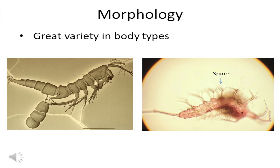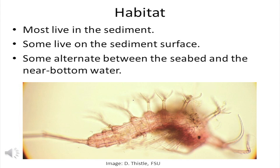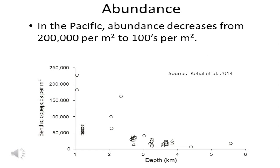Harpacticoids come in a great variety of body shapes. Some are smooth, like the specimen on the left, and some have amazingly complicated and large spines, like the specimen on the right. Most harpacticoids live in the sediment; some live on the sediment surface, and a few alternate between the seabed and the near-bottom water. Harpacticoid abundance in the shallowest portion of the deep sea can be about 200,000 per meter squared, but as you go deeper, the abundance declines until in the deepest portion you might find only a few tens to hundreds of individuals per square meter.